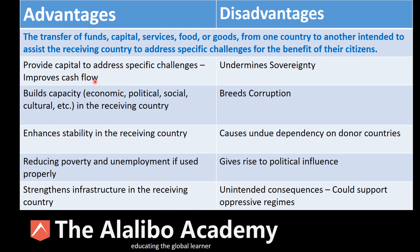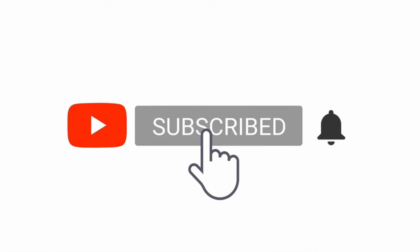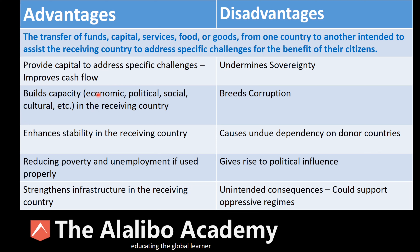When you have money as a country to build infrastructure, to have a functioning health care system and a functioning educational system, that's a good thing. Foreign aid will go a long way to help countries that are really struggling to achieve those goals. It also builds capacity — economic, political, social, and cultural capacity in the receiving country. Capacity means self-sufficiency, and that's a very important outcome.